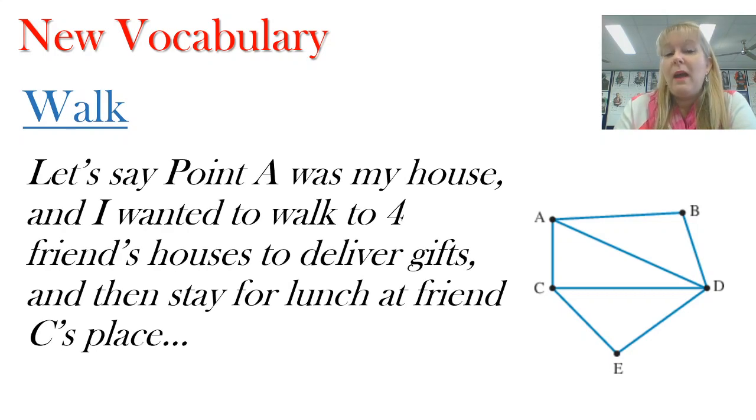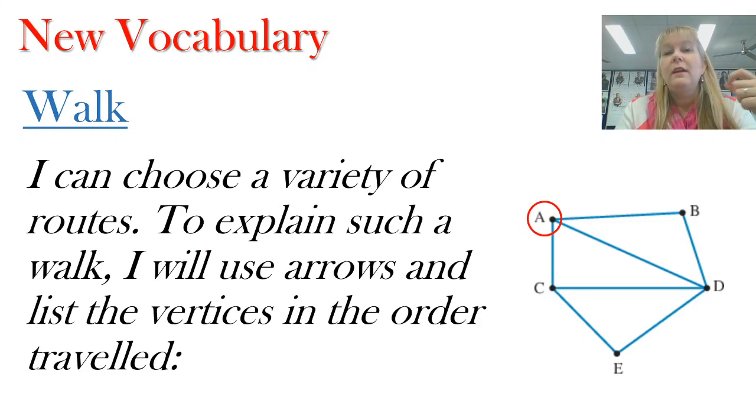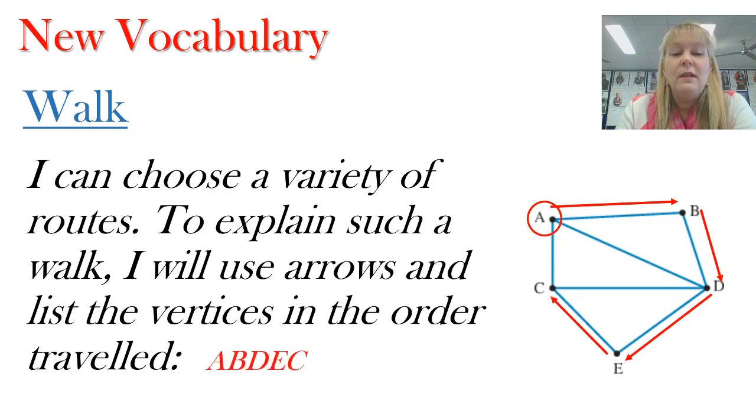So let's say point A was my house and I wanted to deliver some presents to some different friends and finish at friend C's house for lunch. I could do this any number of ways but I'm going to start at point A and list off with my pen all of the different points and vertices that I travel through as I go. I can also use arrows along my network to indicate the way that I'm going. So notice here I've taken my arrow from point A to point B and then I'm going to go to D, E and C and then I'm going to finish there for lunch. So now I'm going to list my vertices that I've traveled and that explains the walk to somebody else of where I've started, where I've finished and what I've visited in between.